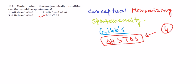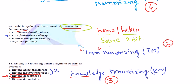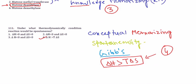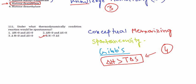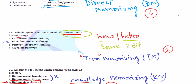So we have encountered four different types of questions: Direct Memorizing (DM), Term Memorizing (TM), Knowledge Memorizing (KM), and Conceptual Memorizing (CM). These are the four types of questions you'll encounter in Group B of the CSIR-NET question paper. Make sure you have knowledge of the terms you're using and a slight understanding of the concepts. Thank you.